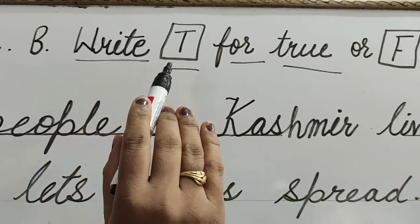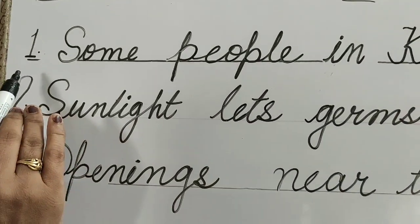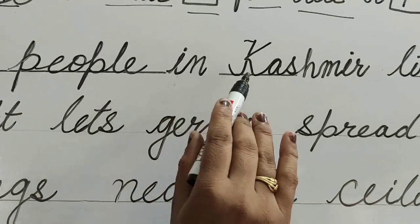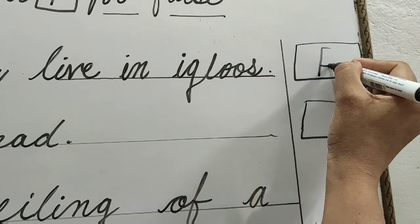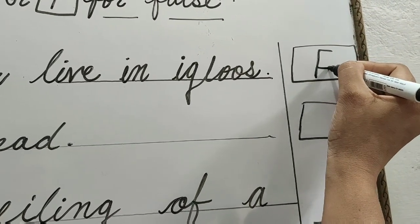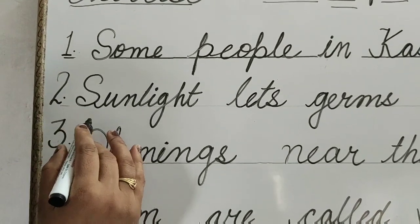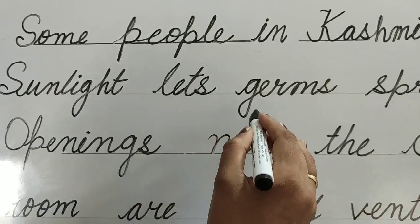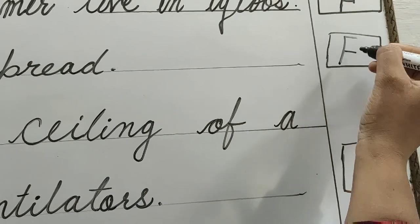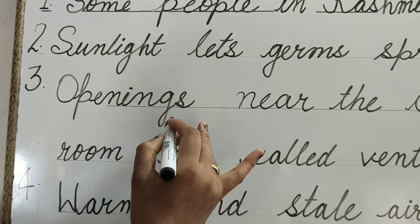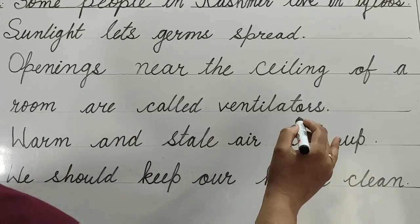Exercise B. Write T for true or F for false. Question 1: Some people in Kashmir live in igloos — False. Write False in the box. Question 2: Openings near the ceiling of a room are called ventilators — True.